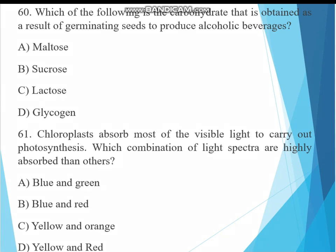Question 60. Which of the following is the carbohydrate that is obtained as a result of germinating seeds to produce alcoholic beverage? A. Maltose, B. Lactose, C. Glycogen. The answer must be maltose. Maltose - germination breaks starch into maltose used in fermentation.